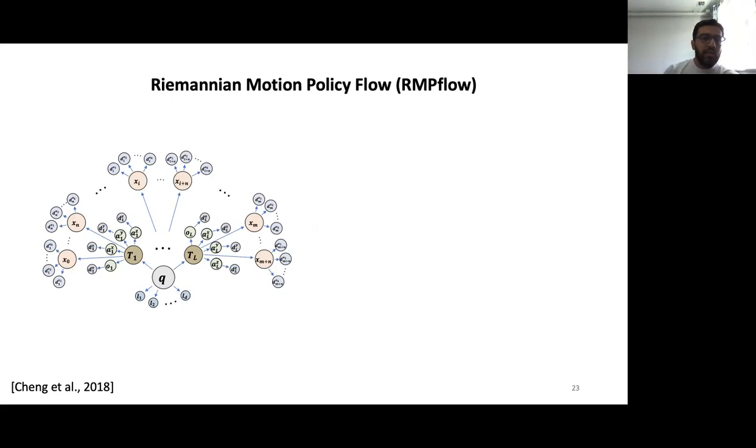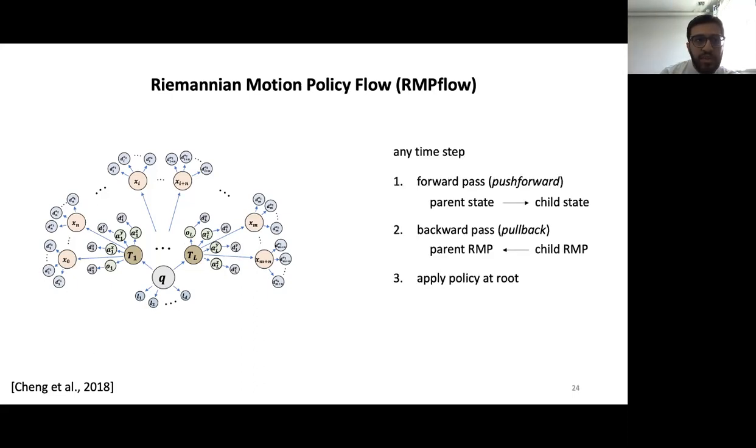When you have this tree, the actual algorithm becomes quite simple and it just involves these three steps: starting with a forward pass through the tree where you start from the root node's state and go all the way to the leaves, evaluate what the states are there. At the leaves where the RMP policies live, you evaluate what those policies are and then start combining them in a recursive backward pass until you get back the policy at the root that you need to apply. It results in a very simple yet efficient algorithm.